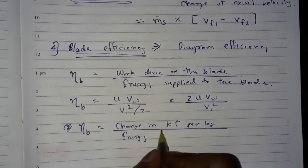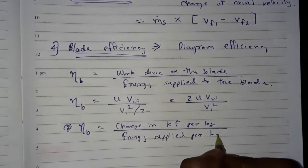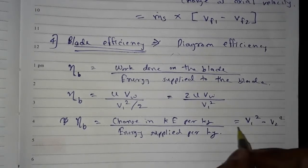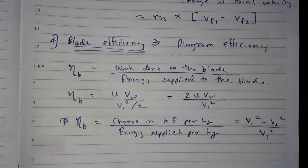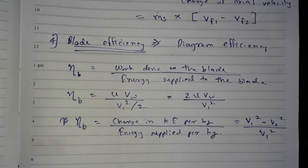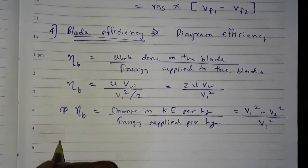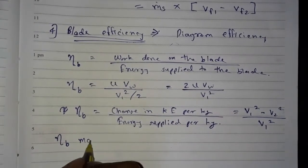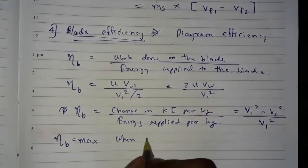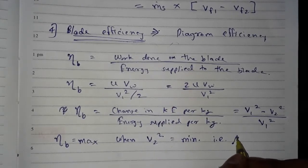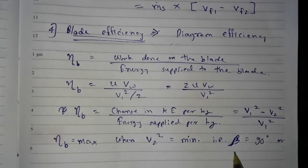Blade efficiency can also be calculated as change in kinetic energy per kg upon energy supplied per kg, written as (V1-squared minus V2-squared) upon V1-squared. Remember: blade efficiency is maximum when V2-squared is minimum, that is when beta equals 90 degrees, or discharge is axial.